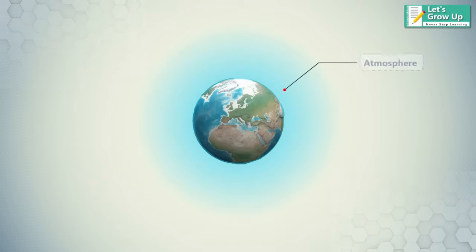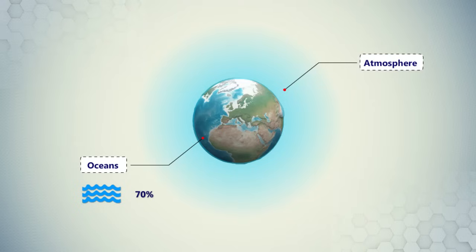It is the only planet known to have an atmosphere containing free oxygen, oceans of liquid water on its surface, and of course life. Roughly 70% of Earth's surface is covered by water, most of it in the oceans, and 30% of Earth's surface is land.